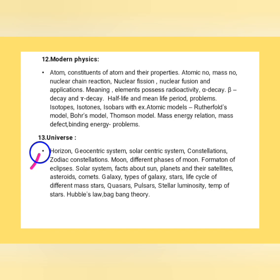The last chapter is the Universe. Topics already covered for the GPSR exam include geocentric and heliocentric systems, constellations, zodiac signs, phases of the moon, formation of eclipses, the solar system, facts about the sun, planets and satellites, asteroids, and comets. New topics to focus on: galaxies, types of galaxies, stars, life cycle of stars of different masses, quasars, pulsars, stellar luminosity, temperature of stars, Hubble's law, and the Big Bang theory. Around 13 units in total for physics in the HSTR exam.